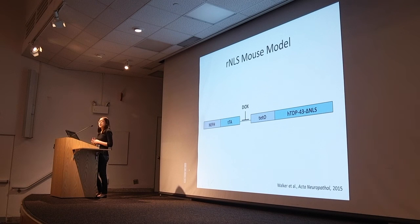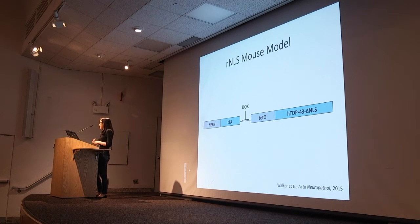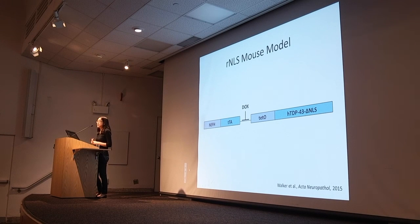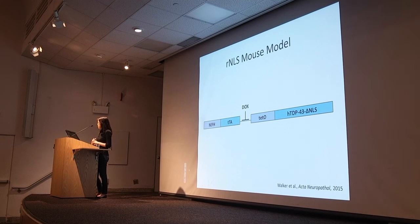This is all under the control of the human neurofilament heavy chain promoter. A doxycycline diet inhibits the tetracycline-controlled transactivator protein from binding to the tetracycline responsive promoter element, which represses transgene expression.